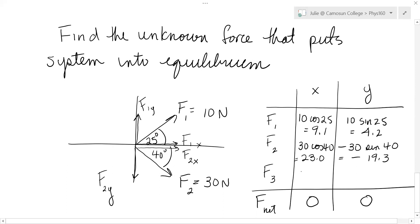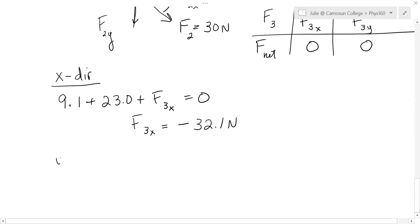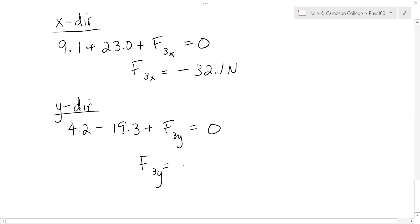Now we're trying to find F3 X. We don't know what it is. And F3 Y, we don't know what it is, but we know when we add those three numbers together in each column, we have to get zero. So for the X direction, when we add down, we have 9.1 plus 23 plus F3 X must be zero. So this leads to F3 X being negative 32.1, which would make sense. It has to point left to balance those two. And similarly in the Y direction, we would have the 4.2 minus the 19.3 plus F3 Y has to be zero as well. And that gives an F3 Y of 15.1.